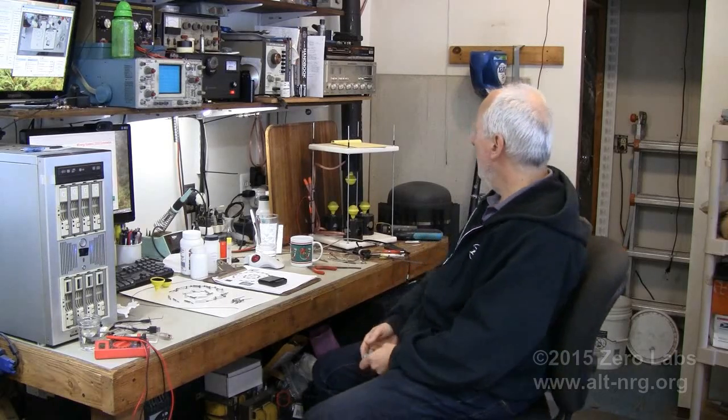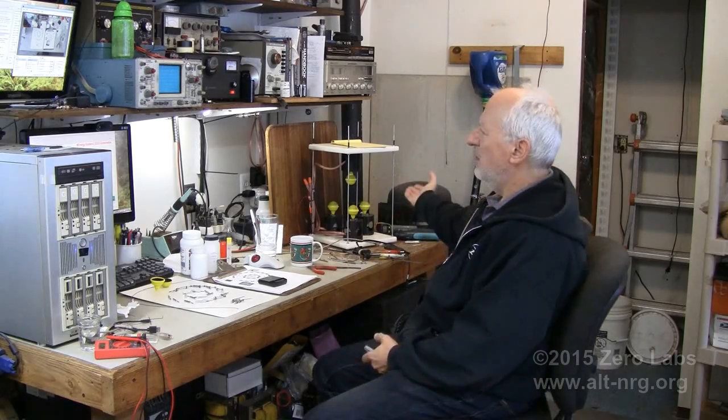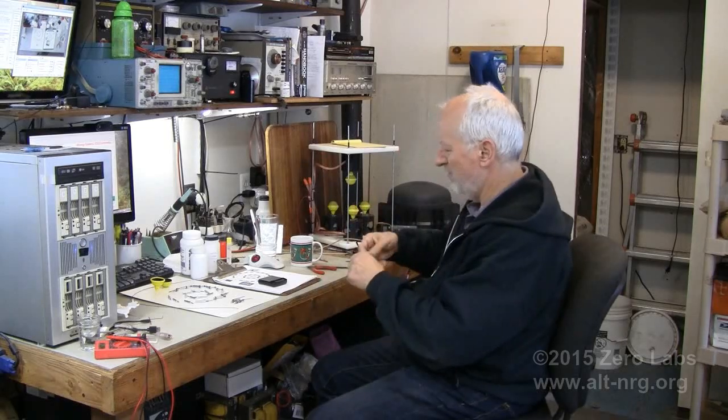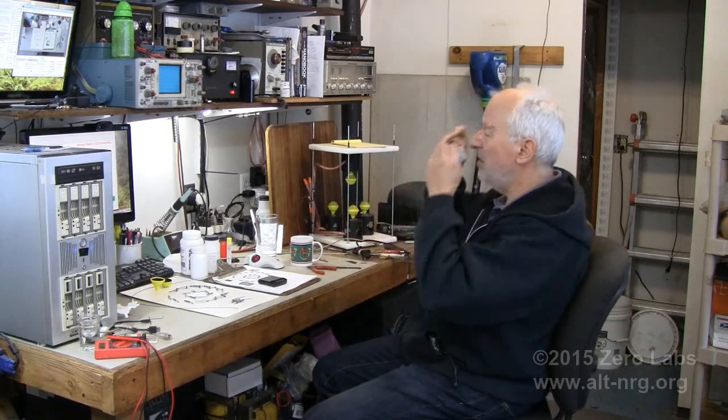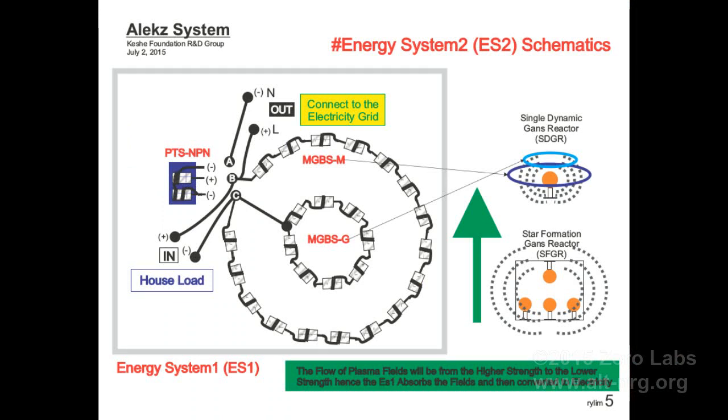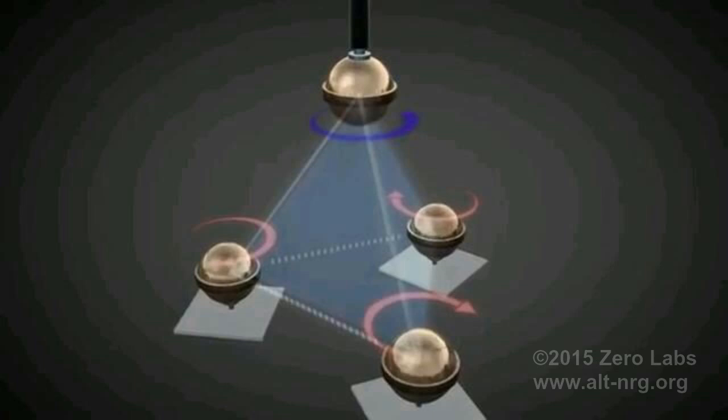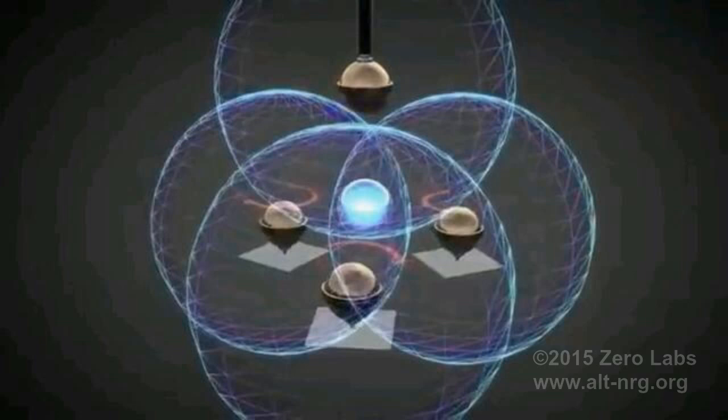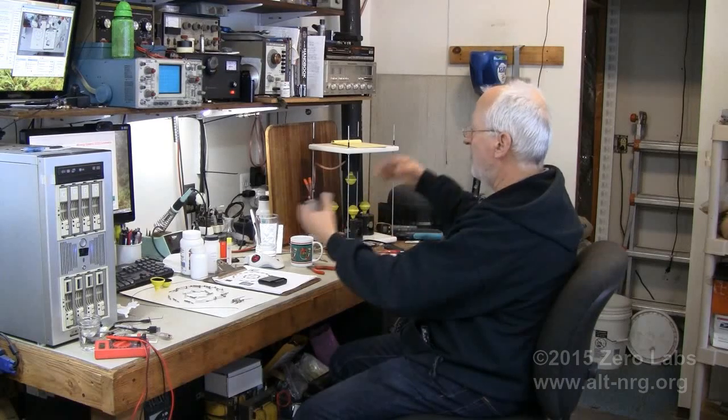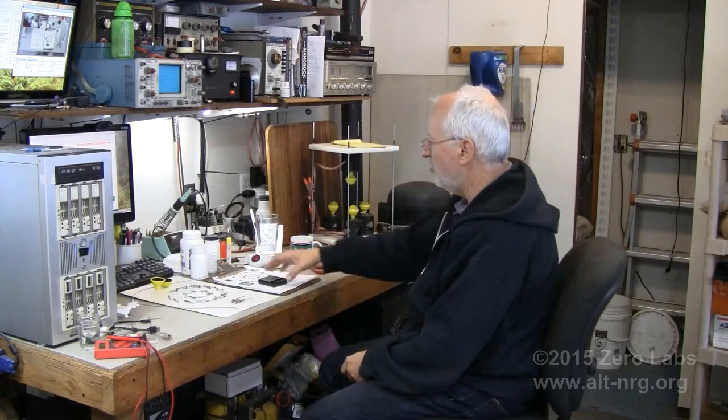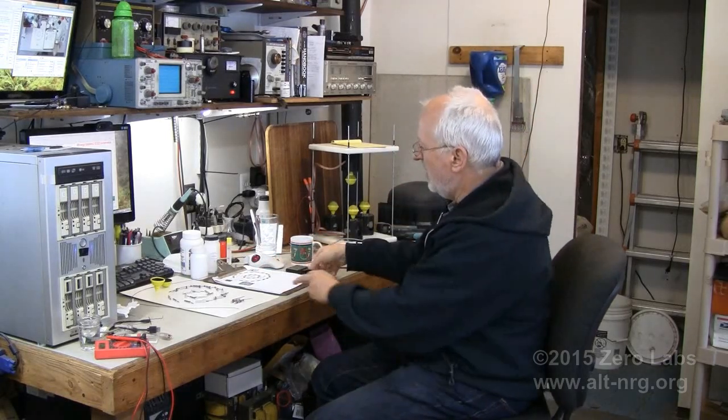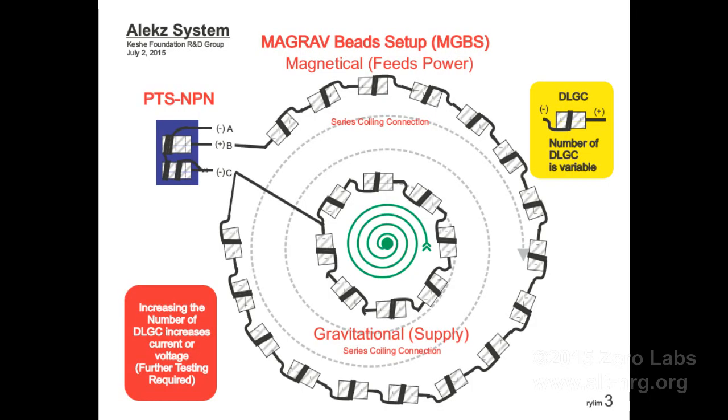As you can see, we have what he calls the Star Formation GANS Reactor. The Star Formation GANS Reactor is acting as a plasmatic energy field that is supposed to get picked up by the Magrav Energy Bead System, or the MGBS.